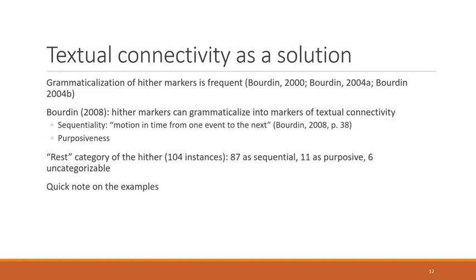There are other types of textual connectivity as well. The only other one I'm going to talk about today is purposiveness — the idea that the action taken is done with purpose, with intention; it's not just something that accidentally happens. Using these two categories to categorize our rest category of 104 instances, we see that 87 can be classified as sequential, 11 as purposive, and six that we cannot categorize as either.